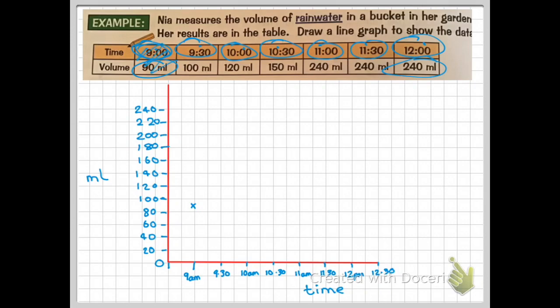Moving on to my next one: 9:30 now and up to 100. I do have that on my y-axis so I can plot the point there. So I've done that one now. Then 10 o'clock and 120 milliliters, so that would be about here. 10:30 is 150, so find 10:30, go along the corridor and then up to 150. So again there's not 150 but I do have 140 and 160, so I'll go halfway in between.